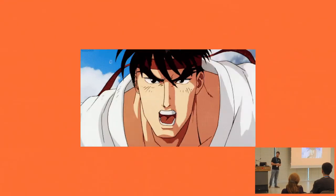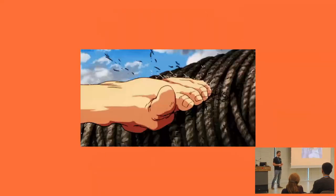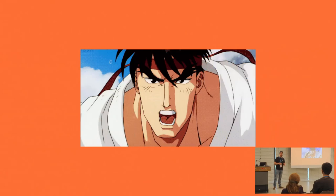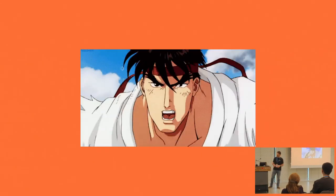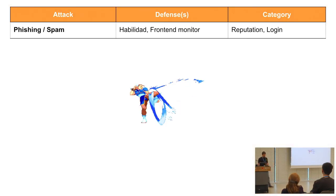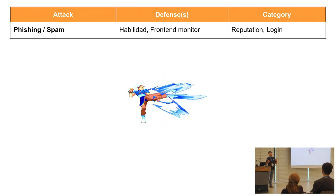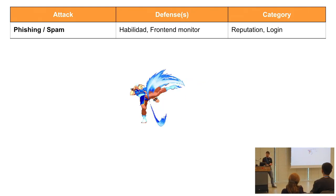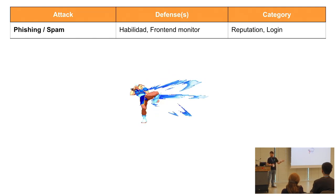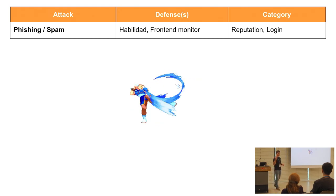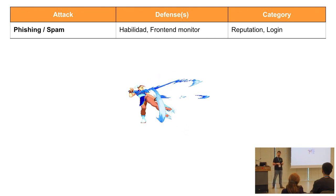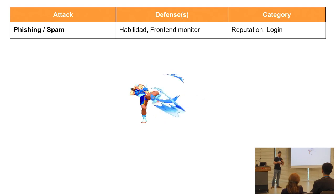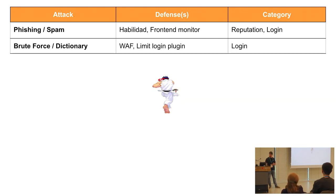Now we've gone through attacks, let's go through defense. As the GIF represents, it's a matter of experience normally. We always joke in cybersecurity that security and backups are the things you remember about only after you've already been hacked. For phishing and spam, the best defense is some knowledge - what we're doing right now - and a front-end monitor. For example, SiteCheck from Sucuri is a front-end monitor where you can put your domain and get an idea of what's happening on the front end.